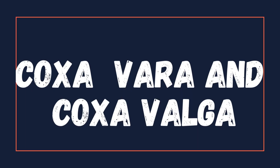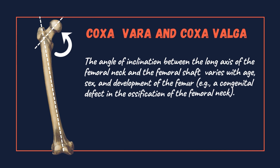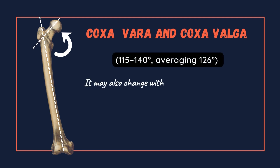Our first topic is coxa vara and coxa valga. The angle of inclination between the long axis of the femoral neck and the femoral shaft varies with age, sex, and development of the femur — for example, a congenital defect in the ossification of the femoral neck. It averages about 126 degrees.